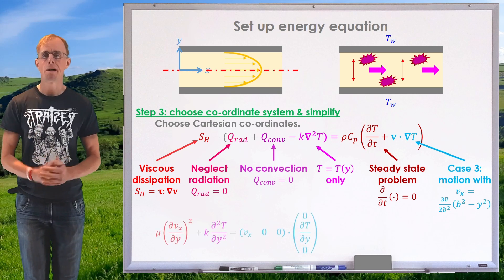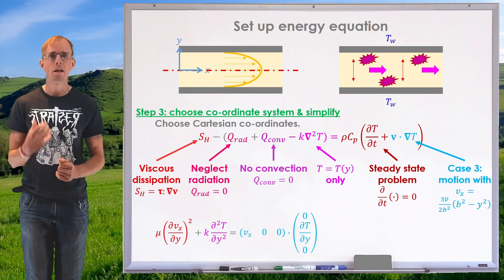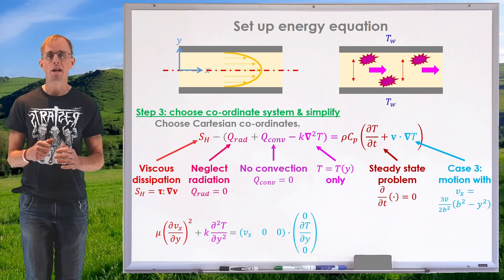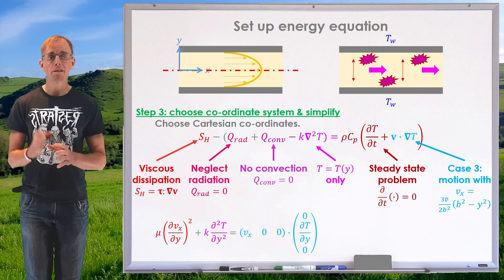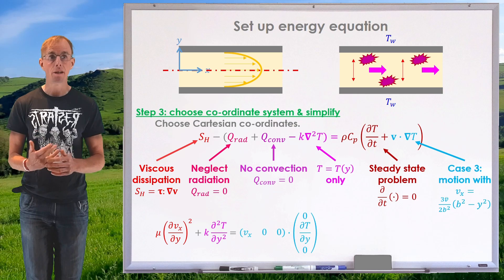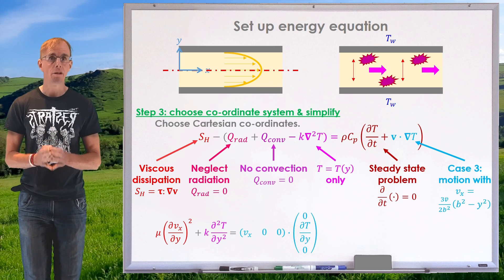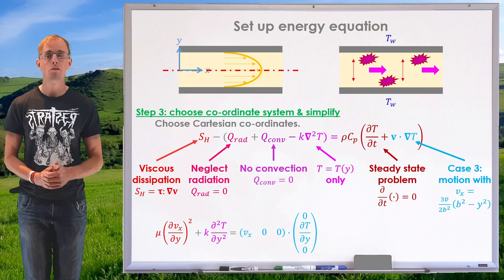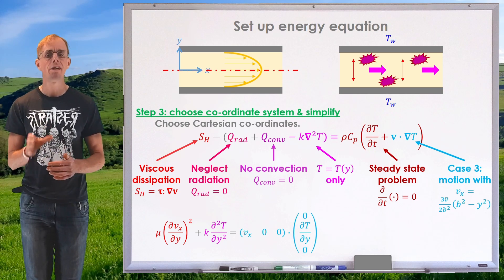My viscous dissipation term for unidirectional flow is mu times (d/dy of vx) all squared — the result from the last part of this lesson — and since I know vx I can work out that derivative. For the conduction terms, with the assumption that everything is fully developed and the only temperature gradient is in the y direction, I simply have k times d²T/dy². I have a steady state problem, so the only remaining term on the right-hand side is the advective term.